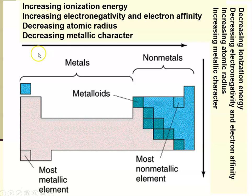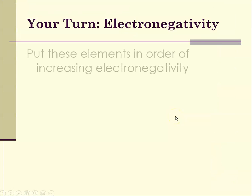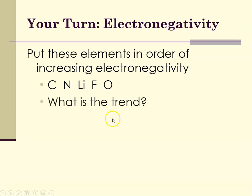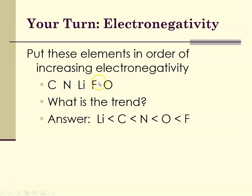So now electronegativity. Electronegativity increases from left to right across a period and decreases from top to bottom within a group. Put these elements in order of increasing electronegativity. These are all in the same period. Remember that the highest electronegativity on the periodic table is fluorine, so if it's increasing, fluorine has to be last. The trend increases from left to right, so lithium on the left has the least, and fluorine on the right has the greatest electronegativity.